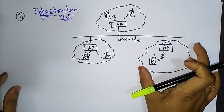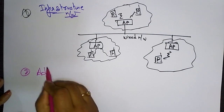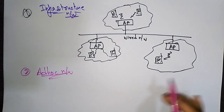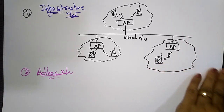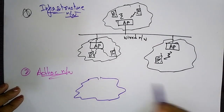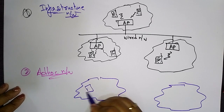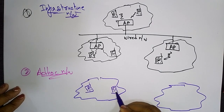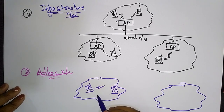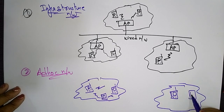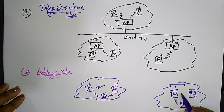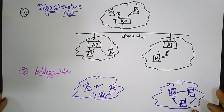Whatever devices are present within a particular access point's range, communication is accessible to that range. The ad hoc network doesn't require any access points and doesn't require any wired network — everything is wireless. All devices communicate directly within that range. In ad hoc networks, wired communication infrastructure is not required. This is a basic introduction to wireless communication.